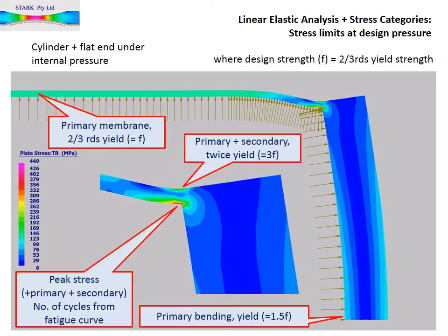Considering a simple cylinder with a flat end to illustrate the linear FEA stress category approach: the more common acceptable pressure vessel materials have a design strength F equal to two-thirds of the yield strength. The primary general membrane stress in the cylinder, remote from the discontinuities, is limited to two-thirds yield at design pressure. That is, we should be able to apply 1.5 times the design pressure without causing any significant yielding to the cylinder. The primary bending stress in the flat end is limited to the yield strength, and accordingly at design pressure its maximum bending stress doesn't exceed the yield strength.